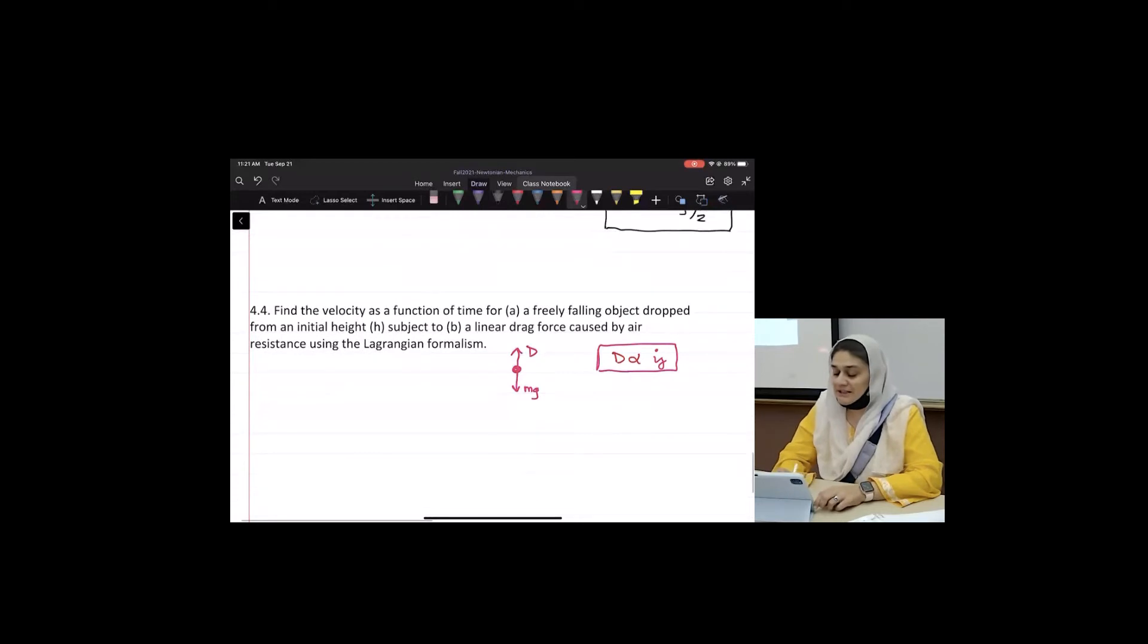So your T will be one half m y dot squared. And your V will be minus mg h. Where h is the distance. Be very careful, h is the distance that this falls, not the distance that this is coming up. This is the distance that it's falling. So as h becomes larger, potential becomes smaller.